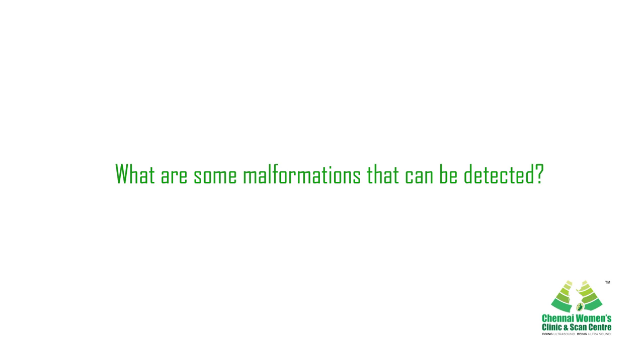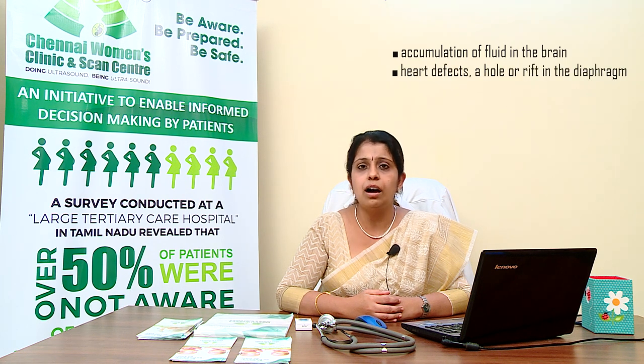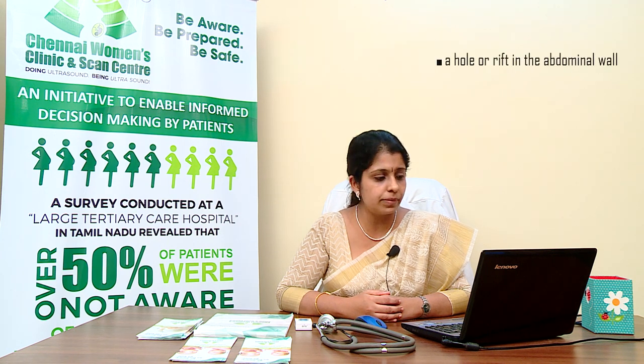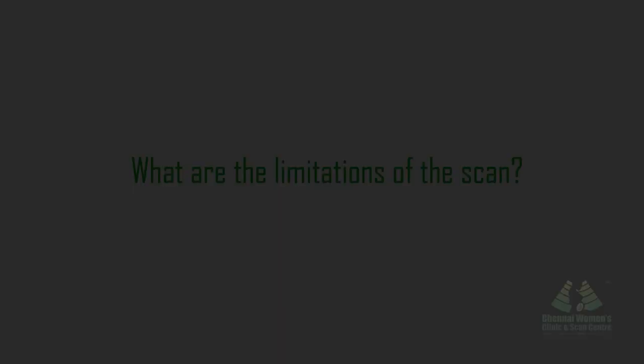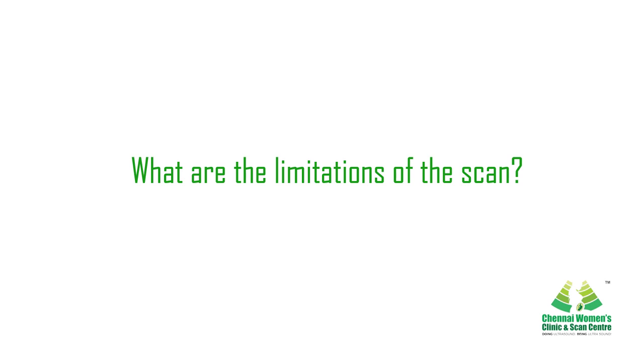What are some malformations which can be detected in a routine anomaly scan? Examples of physical defects that can be revealed by a 20-week scan include spinal cord defects, neural tube defects, improper formation of the baby's skull, fluid accumulation in the brain, heart defects, a hole or rift in the diaphragm, a major hole or rift in the abdominal wall, missing or malformed kidneys, and malformed arms and legs.